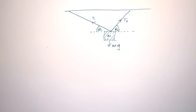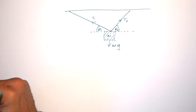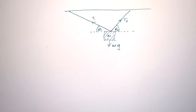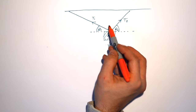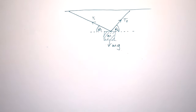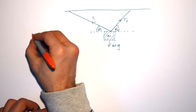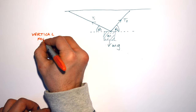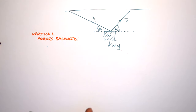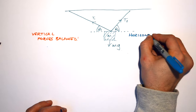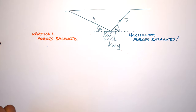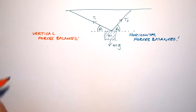The tensions T1 and T2 act at angles theta 1 and theta 2 to the horizontal. It doesn't look like we know a lot, but we do know the system is in equilibrium — the mass is not accelerating up, down, left, or right. So we know that vertical forces are balanced, and horizontal forces are balanced as well.